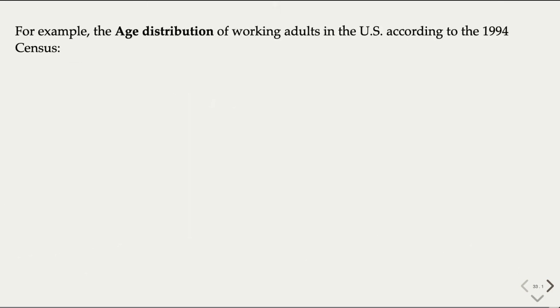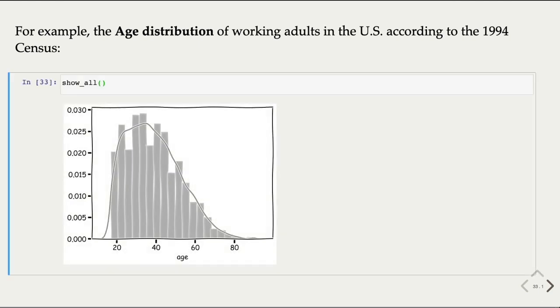For example, let's look at the age distribution of working adults in the U.S. according to the 1994 census data. Here all data are used to plot the distribution, so we are looking at the global picture. Based on this distribution, you can tell that it is not completely abnormal to have working adults at the age of 20 or younger, even though they are not as common. So it does happen that some working adults are quite young.